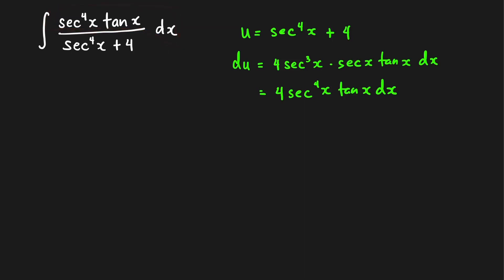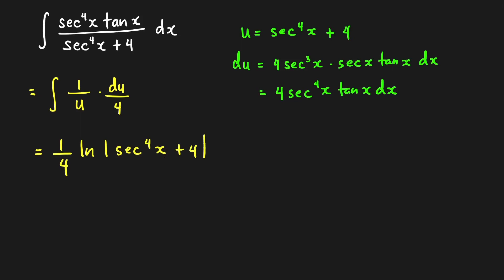We can now write our integral as the integral of 1 over u times du over 4. Therefore, this is equal to one-fourth ln of the absolute value of u, where u equals secant raised to 4 of x plus 4, plus C. Since this expression is always greater than 0, we can replace the absolute value with a plain grouping symbol. This is our final answer.